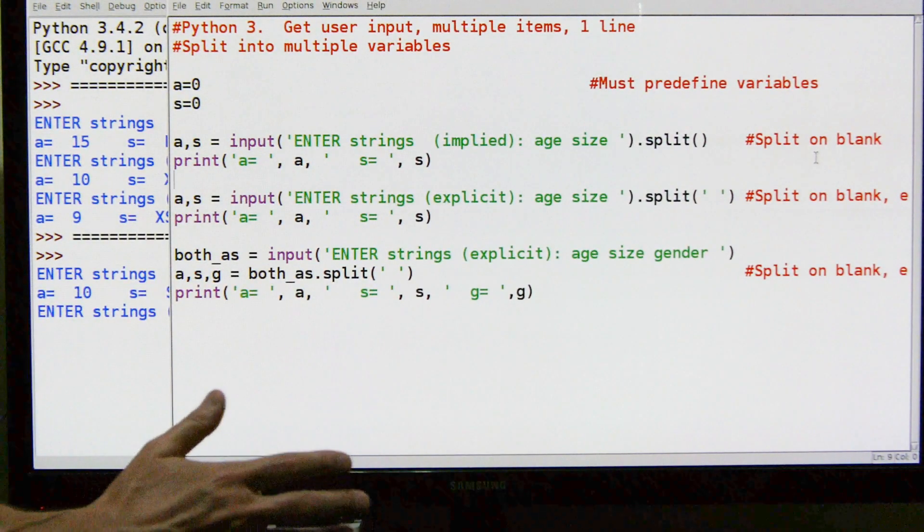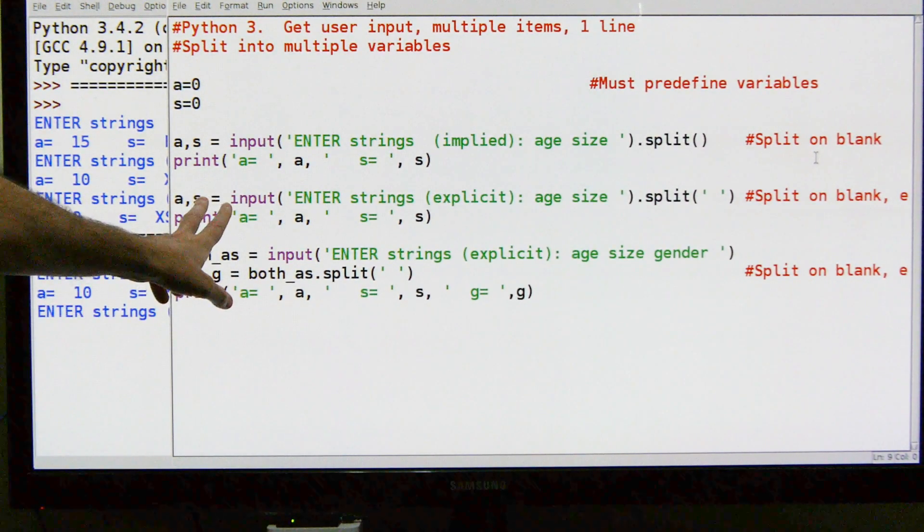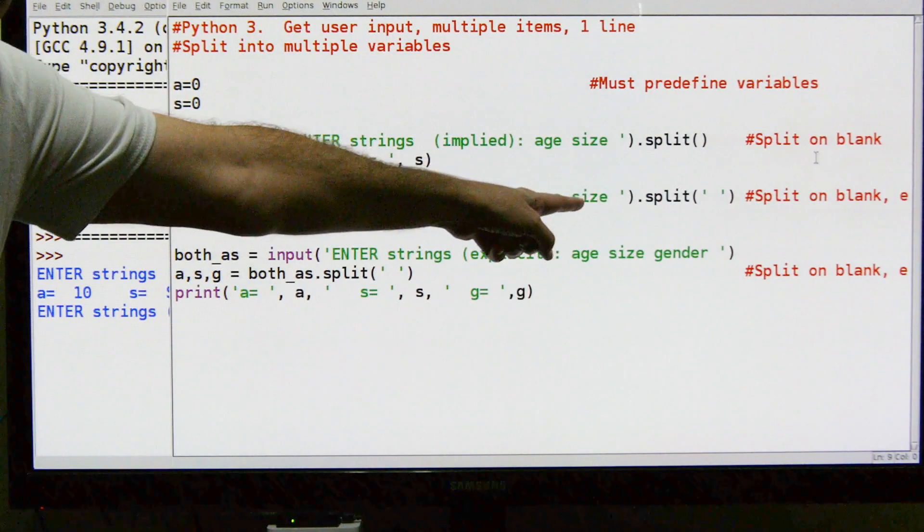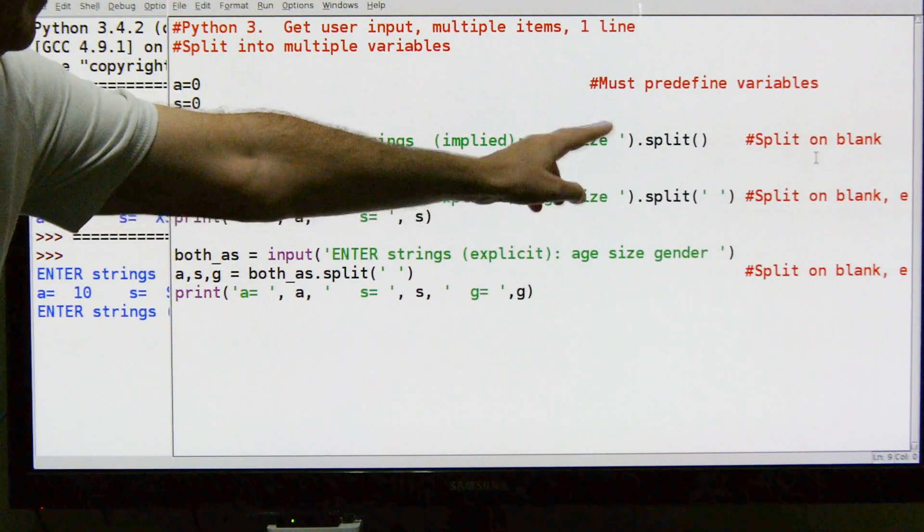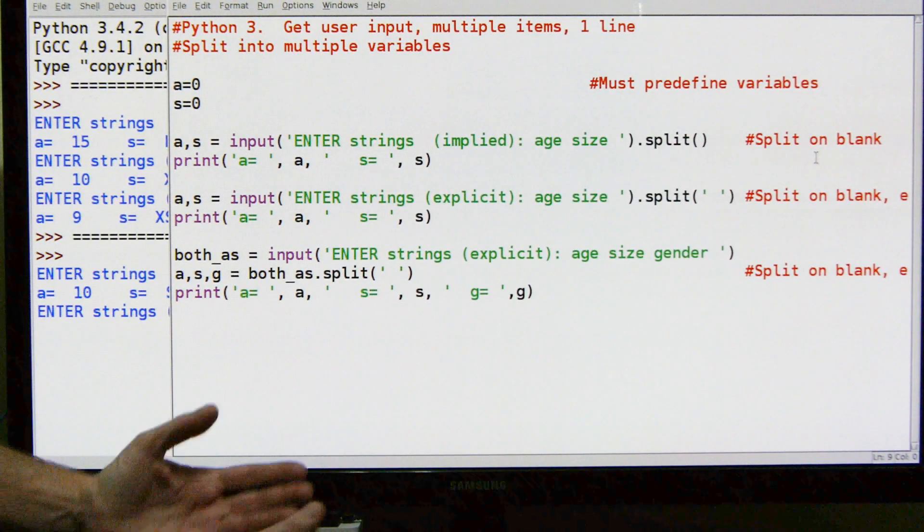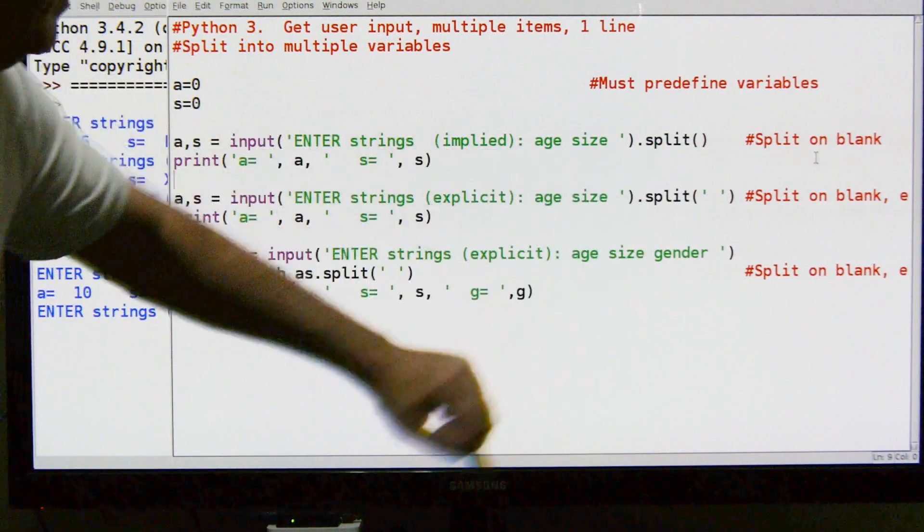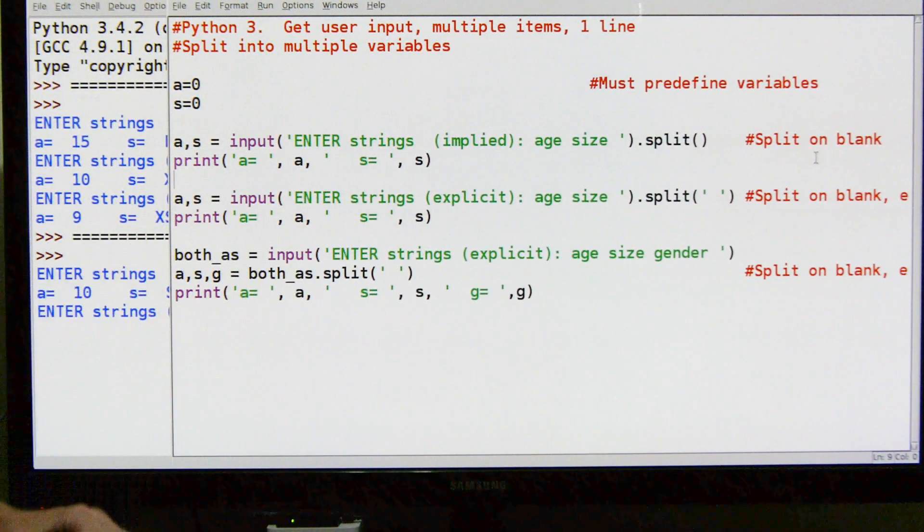If you don't remember that it's a space, you can explicitly put something else out there. I put an explicit split on the next line - it's exactly the same code. I could make it a space, I could make it a comma, I can make it a period, I can make it a dash, anything I want to split on.